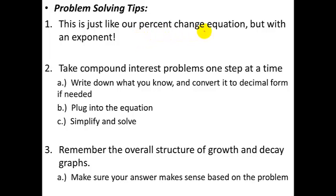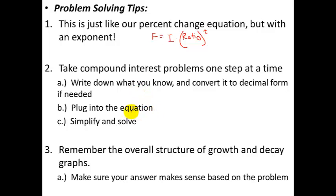Problem-solving tips: these are just like our percent change equations. All we're doing is allowing the process to happen multiple times, so we put an exponent up here. For compound interest problems, go one step at a time. First, write down what you know and what you're trying to find, and convert everything to decimal form. Second, plug the knowns into the equation. Third, solve. Also remember the growth and decay structure — make sure your answer makes sense. Exponential growth should give a very large answer; exponential decay a very small one.